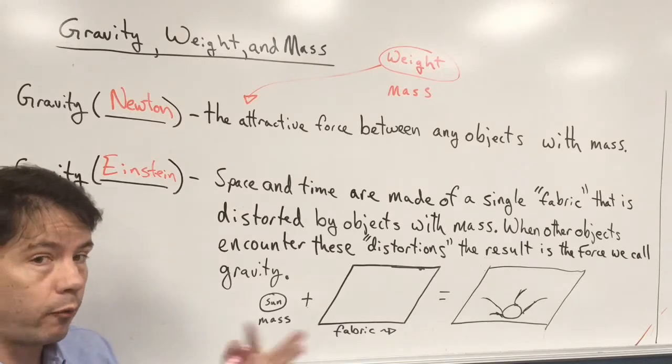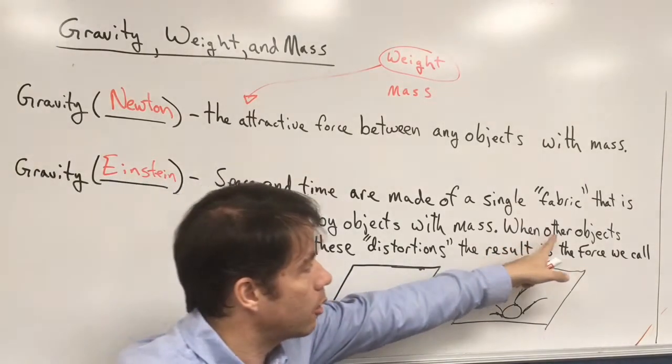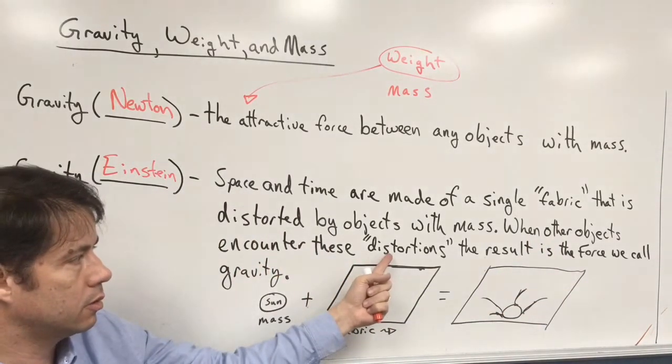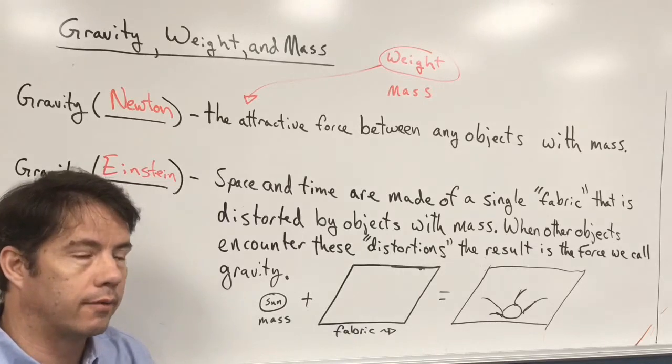Now weight, or the force of gravity, is going to be experienced when another object encounters this distortion. The result is going to be the force we call gravity.